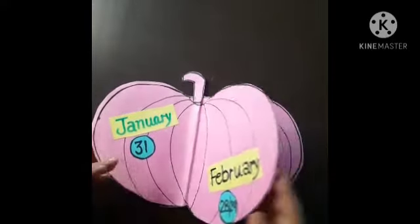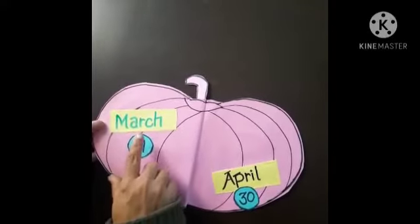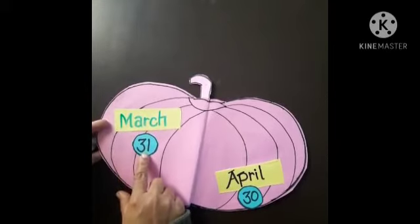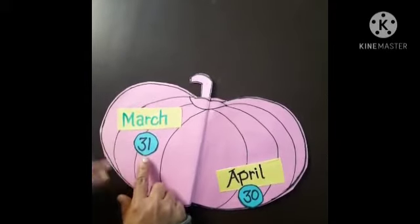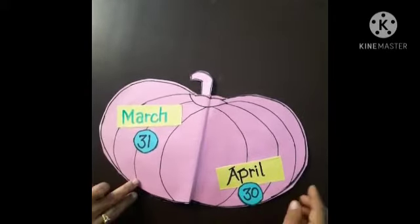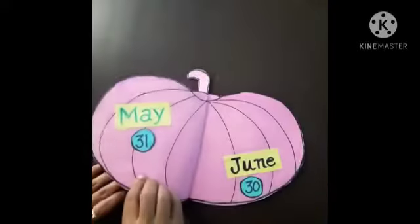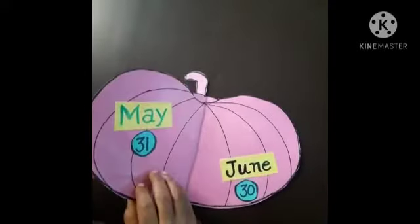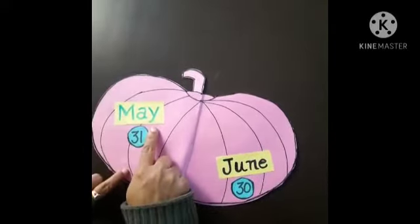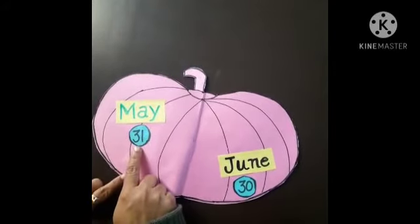Our third month is March, and it has 31 days. April is the fourth month, with 30 days. The 5th month of the year is May, with 31 days.